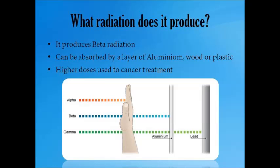It may not seem logical at first, but when using radioiodine for medical use, doctors tend to use higher doses rather than low ones because it tends to kill the tissues in the thyroid, which would become cancerous as a result of the radiation.